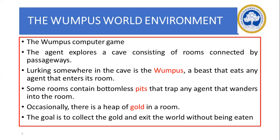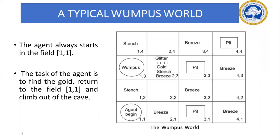For representation, we use a grid pattern with (x, y) coordinates to denote which room the agent is in. We need to logically find the next safe move. Initially, when the agent is in room (1,1), there is no stench smell and no breeze, which means the nearby cells don't have any Wumpus or pit. The agent is able to move either to (1,2) or (2,1) — both possibilities are safe.